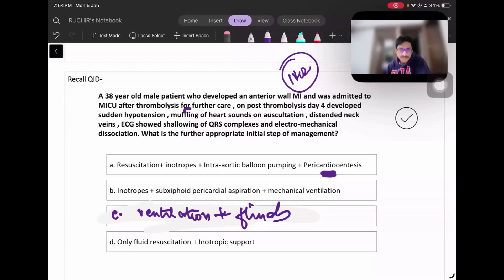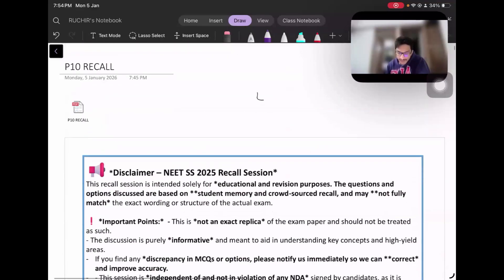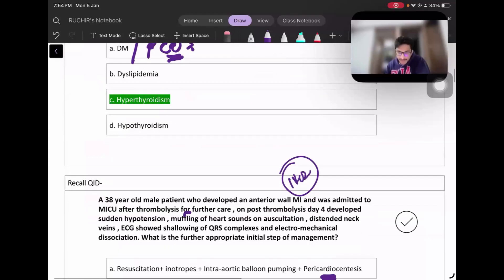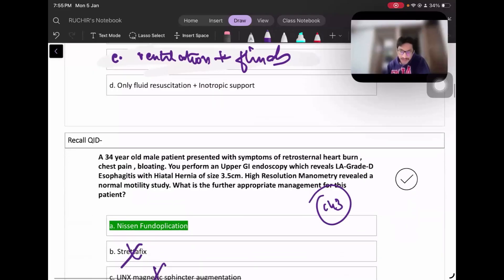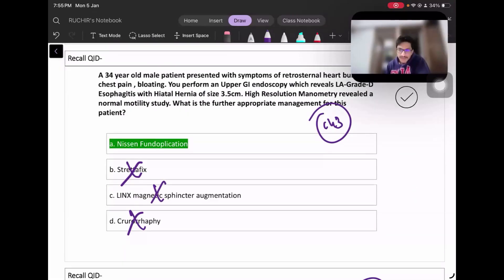For the latecomers, the first question was about obesity - the answer is hyperthyroidism. Second question is about cardiac tamponade. If the options had only one option with pericardial synthesis, that should be the answer. So if option A had resuscitation, inotropes, IABP, and pericardial synthesis, then that would be the answer.